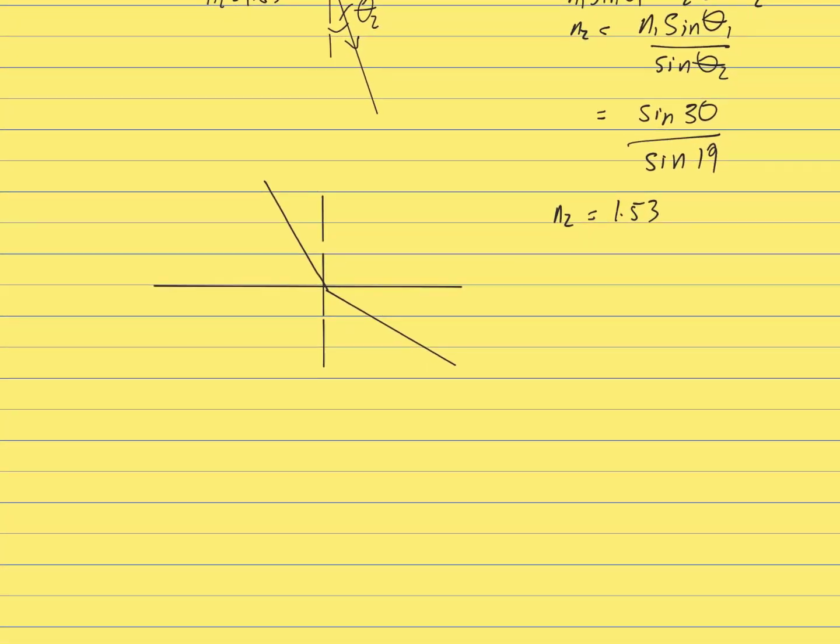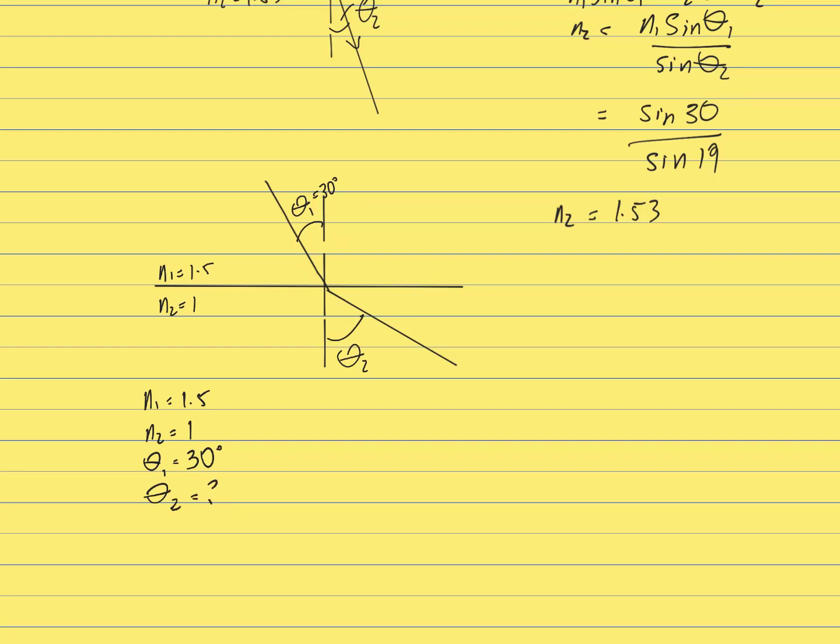This time we've got a problem where we've been told that the first medium has got a refractive index of 1.5 and the second medium has got a refractive index of 1. So therefore it's going to something that's less dense. It's bending away from the normal. We're told that our angle of incidence is 30 degrees, so theta 1 is 30 degrees. And we're asked to find theta 2 equals question mark.